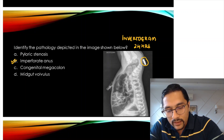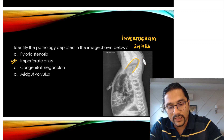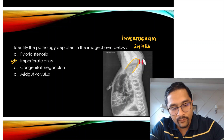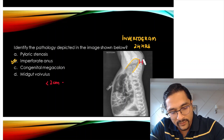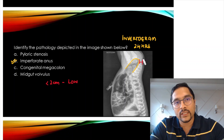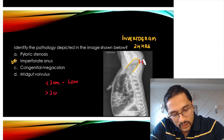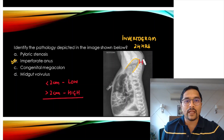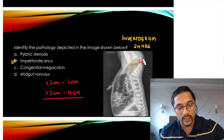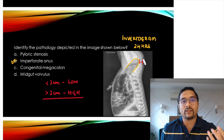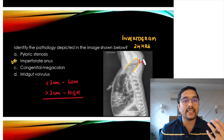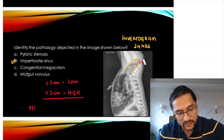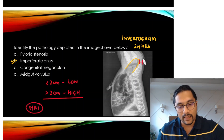When you have the metallic pointer and you can see the gas shadow — if the distance between the metallic pointer and the gas shadow is less than 2 centimeters, we call it a low anorectal malformation; if it is more than 2 centimeters, we call it a high anorectal malformation. For anorectal malformations we do an invertogram, but the best investigation to delineate the anatomy is MRI.